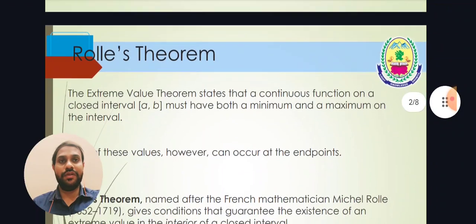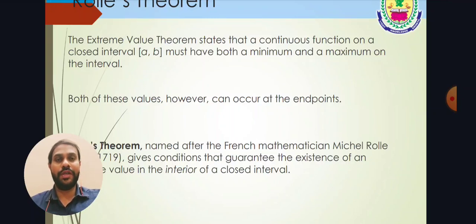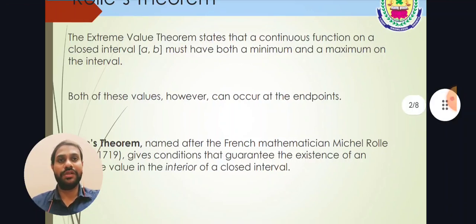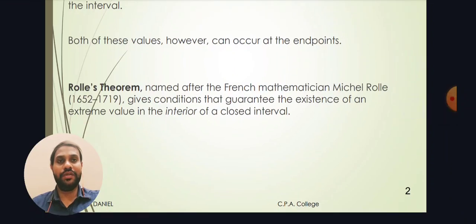This is the history of Rolle's theorem. The statement tells us that for a continuous function in a closed interval [a, b], it must have both the minimum and the maximum values in that interval. Both these values occur at the endpoints. It was named by the famous French mathematician Michel Rolle, who guarantees the existence of an extreme value in the interior of a closed interval — that is, the maximum value found between the closed interval a and b.